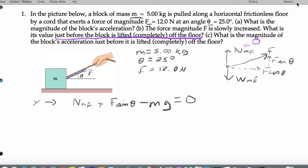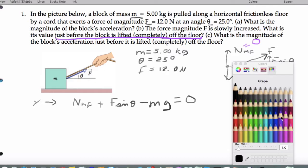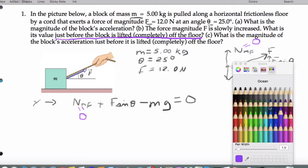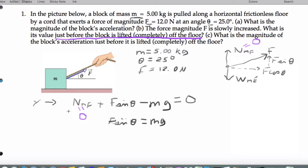Now, the trick here is that this normal force is zero because the block is just about to leave the floor. So what this tells us is that F sine theta equals M times G. So that's the Y equation.